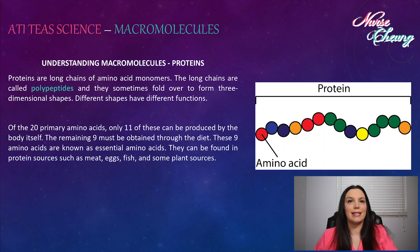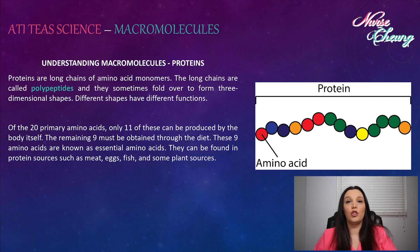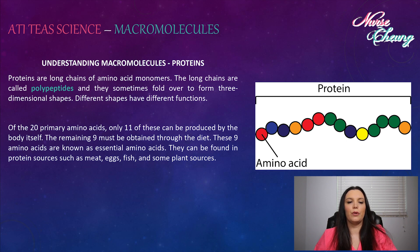Proteins are long chains of amino acid monomers. The long chains are called polypeptides and they sometimes fold over to form three-dimensional shapes. Different shapes have different functions. Of the 20 primary amino acids, only 11 can be produced by the body itself. The remaining nine must be obtained through the diet. These nine are known as the essential amino acids and can be found in protein sources such as meat, eggs, fish, and some plant sources.